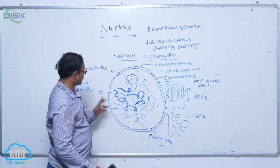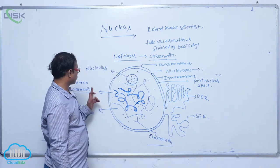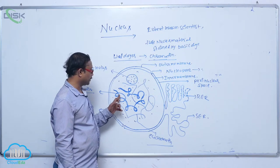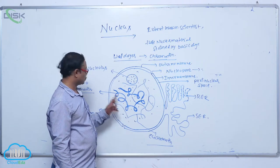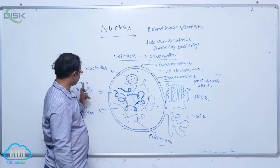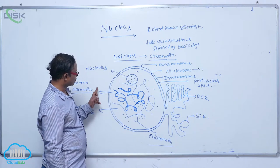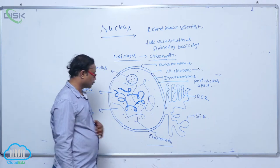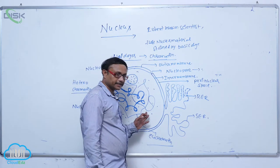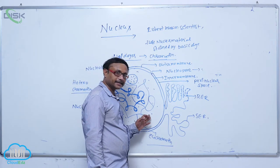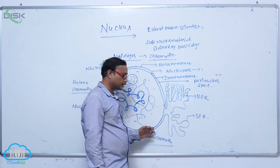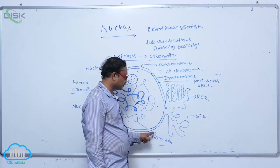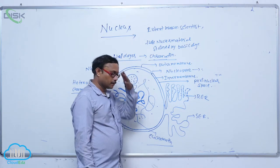After staining, chromatin that has more coils and appears dark in color is known as heterochromatin — it is genetically inactive. Euchromatin appears light in color with fewer coils, and it is genetically active.